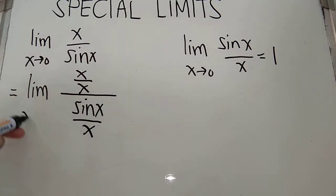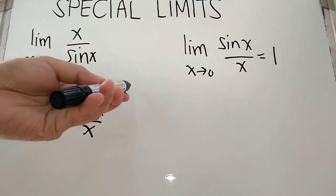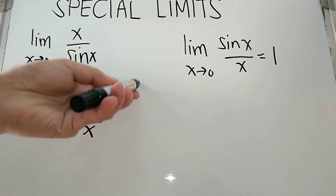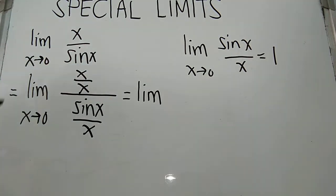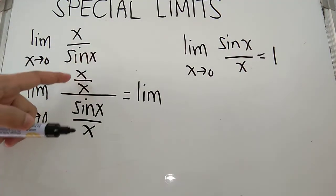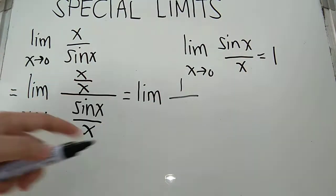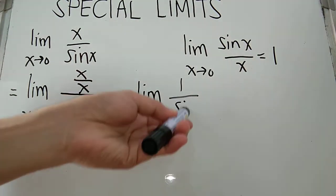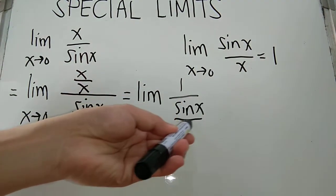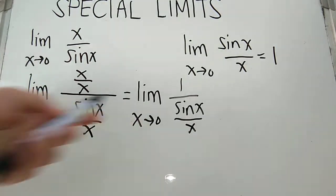As x approaches 0. Now from here we have to simplify, so we will be writing limit. What is x over x? It's 1. Over, we have sin x over x, as x approaches 0.